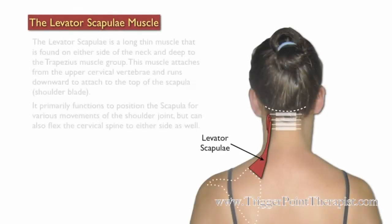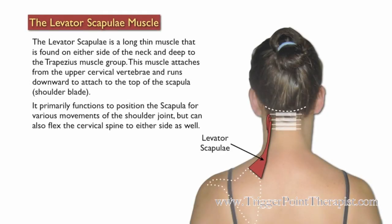The Levator Scapula is a long, thin muscle found on either side of the neck and deep to the trapezius muscle group. This muscle attaches from the upper cervical vertebrae and runs downward to attach to the top of the scapula. It primarily functions to position the scapula for various movements of the shoulder joint, but can also flex the cervical spine to either side as well.